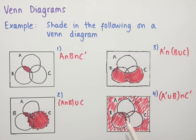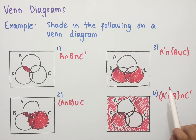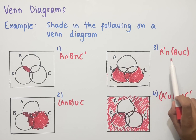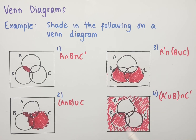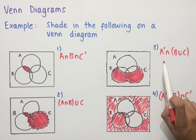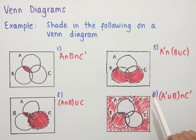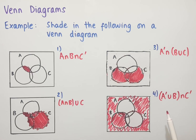In summary, when shading Venn diagrams with three circles, it's best to start from the left and work through each symbol, shading each part and then identifying whether you're looking at the intersection or the union between each of the symbols in your question.